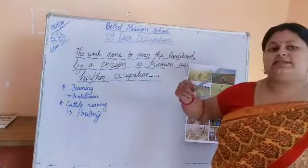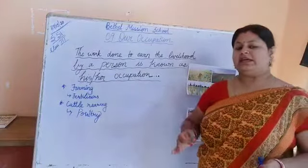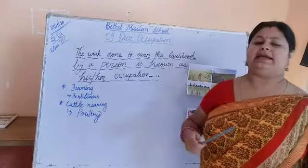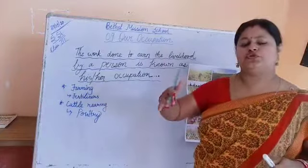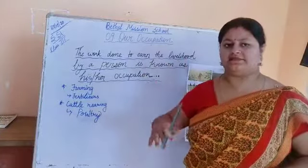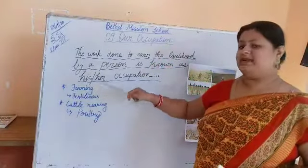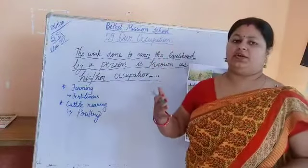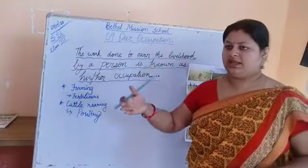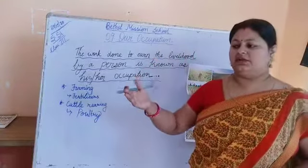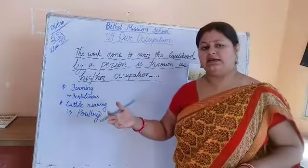Now we will discuss some occupations. First one is farming. What is farming? Farming is the growing of crops such as rice, wheat, maize, paddy. The person who grows the crops is known as a farmer and the process of growing crops is known as farming. There are so many types of farming — sugar cane farming, silk farming, oil farming, coconut farming, fruit farming — different types of farming are there.